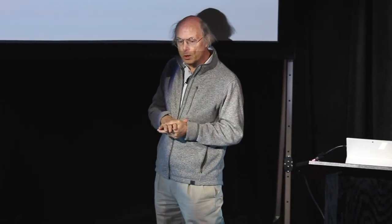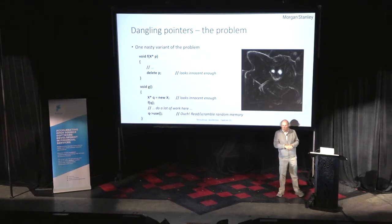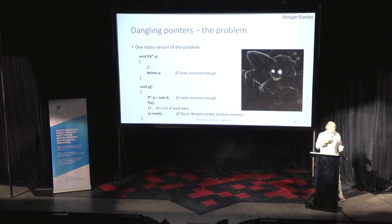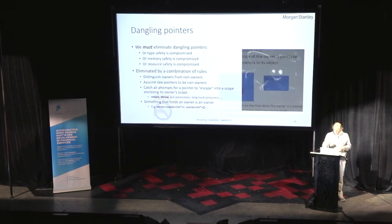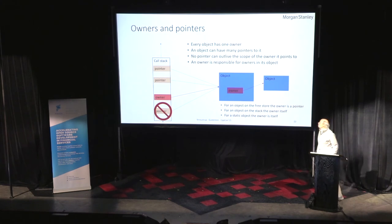This has to be solved for any form of safety guarantee to be done. The rules catch deletes of things that aren't owners, and it catches news that aren't assigned to some kind of owner. So new and delete disappear into constructors, destructors, and other resource management functions. The rule is simple — it's been there from the early days of C. Basically, you mustn't point to an object that's below you in the stack.